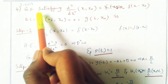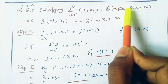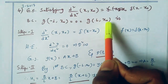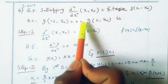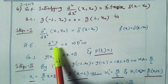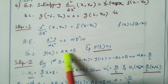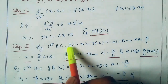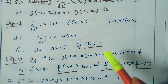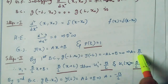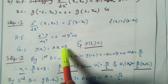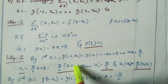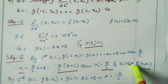This question is from June 2017. The Green's function satisfying d²G/dx² equal to delta(x minus x₀), with boundary conditions g(minus l, x₀) equal to 0 equal to g(l, x₀). The boundaries are minus l and l. Step 1: the homogeneous equation d²y/dx² equal to 0, with general solution y(x) equal to ax plus b, and p(t) equal to 1. Step 2: applying the first boundary condition y(minus l) equal to 0: minus al plus b equal to 0, giving a equal to b/l.